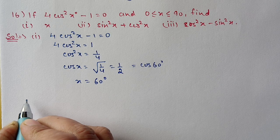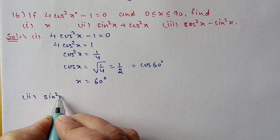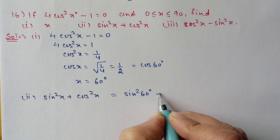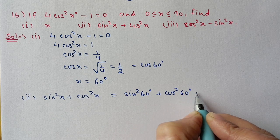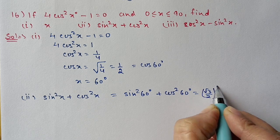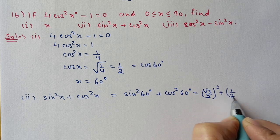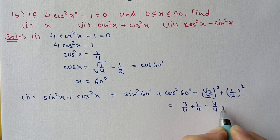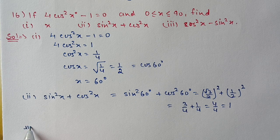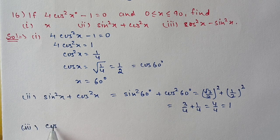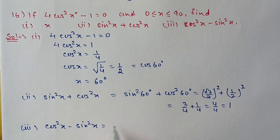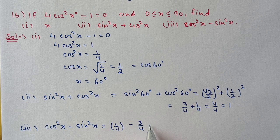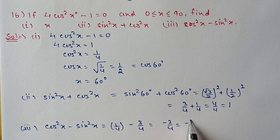For the second part, we find sin squared x plus cos squared x, which is sin squared 60 plus cos squared 60. Sin 60 value is root 3 by 2 whole squared, cos 60 value is 1 by 2 whole squared. After squaring: 3 by 4 plus 1 by 4 equals 4 by 4, which equals 1. For the third part, cos squared x minus sin squared x: cos squared x is 1 by 4, minus sin squared 60 which is 3 by 4, so minus 2 by 4, meaning minus 1 by 2.